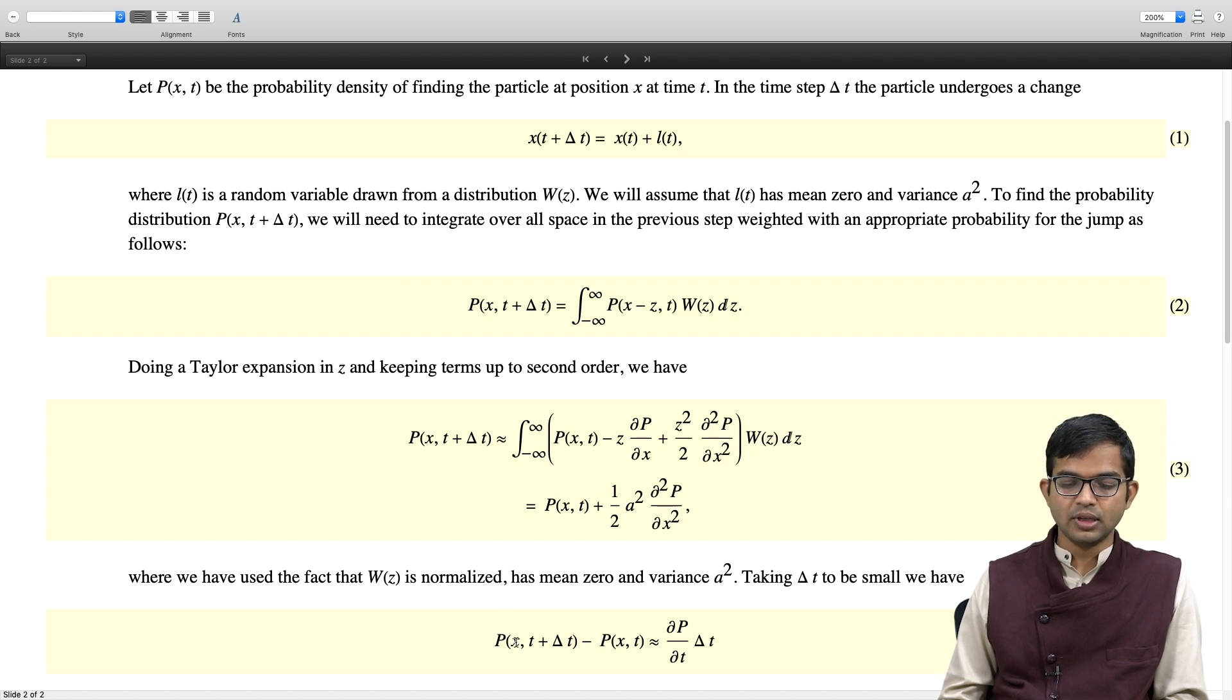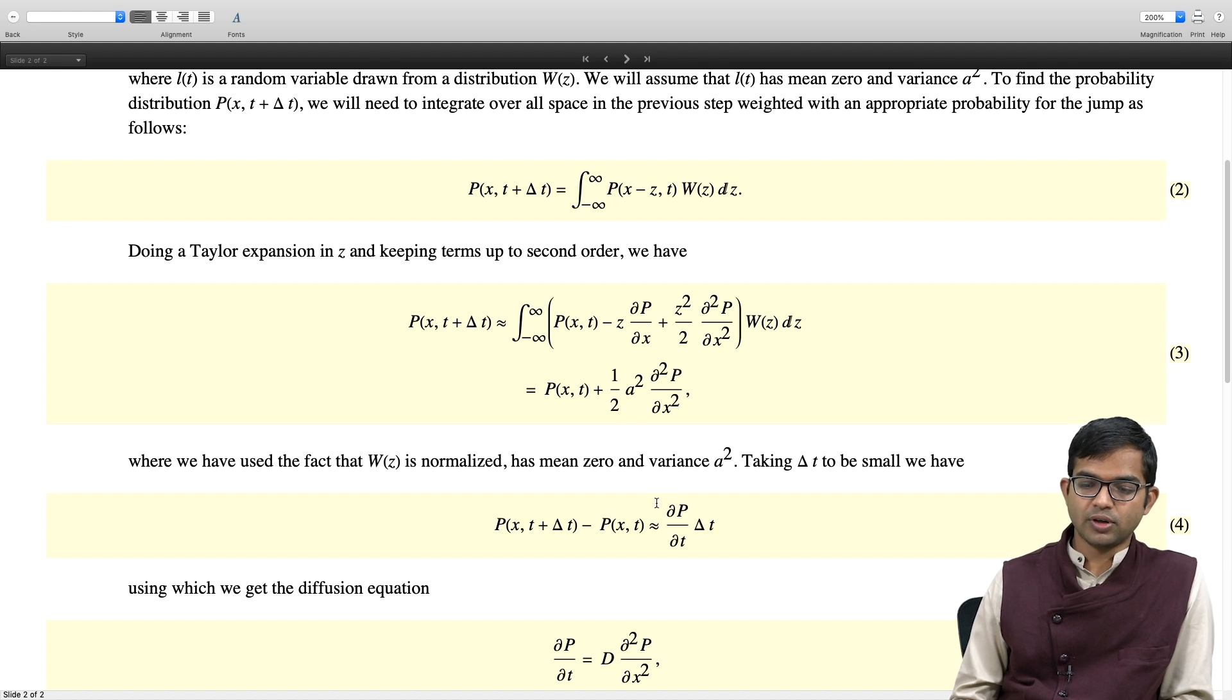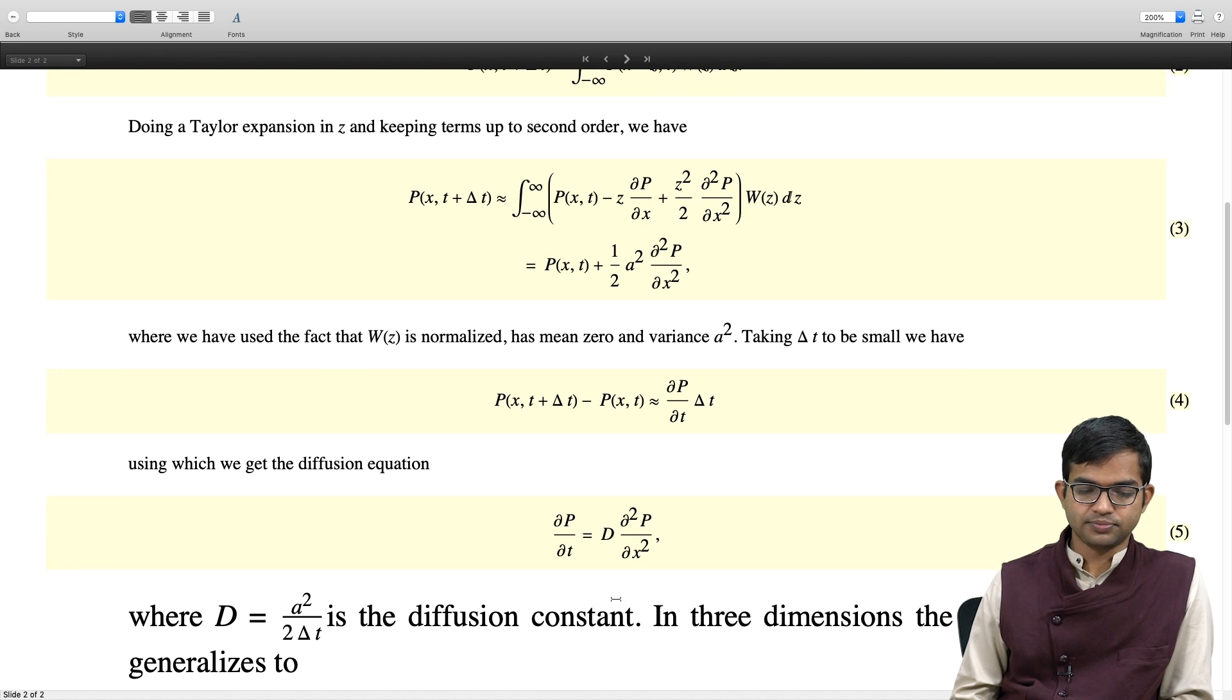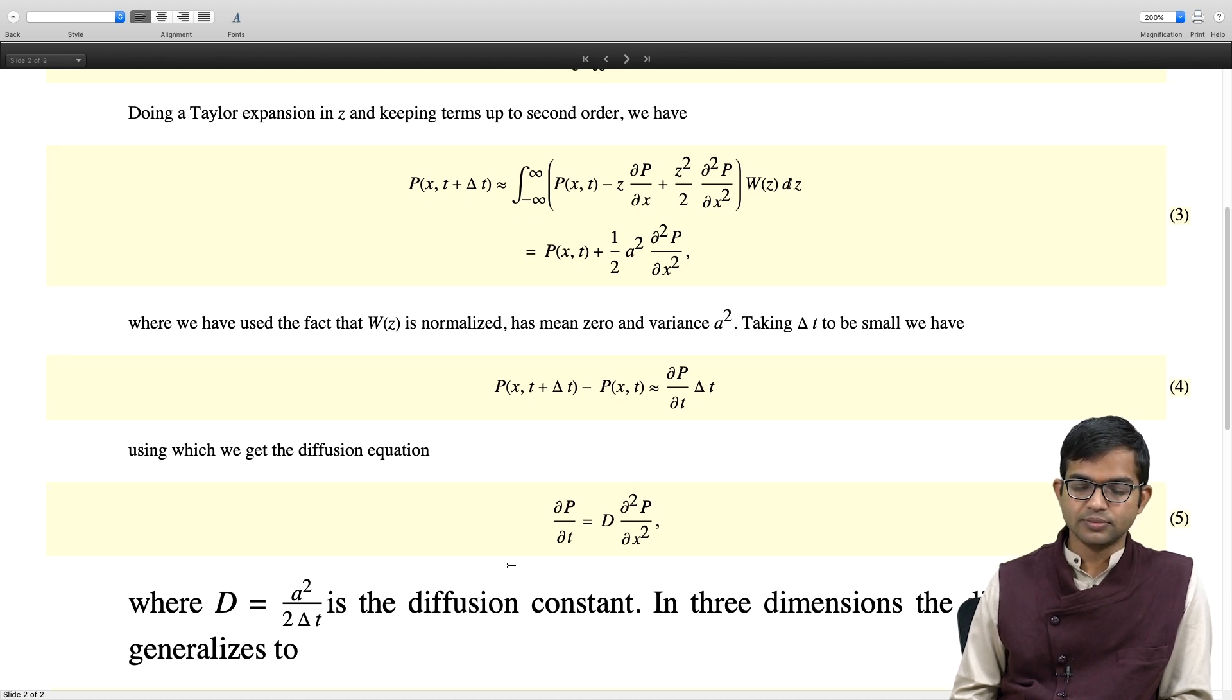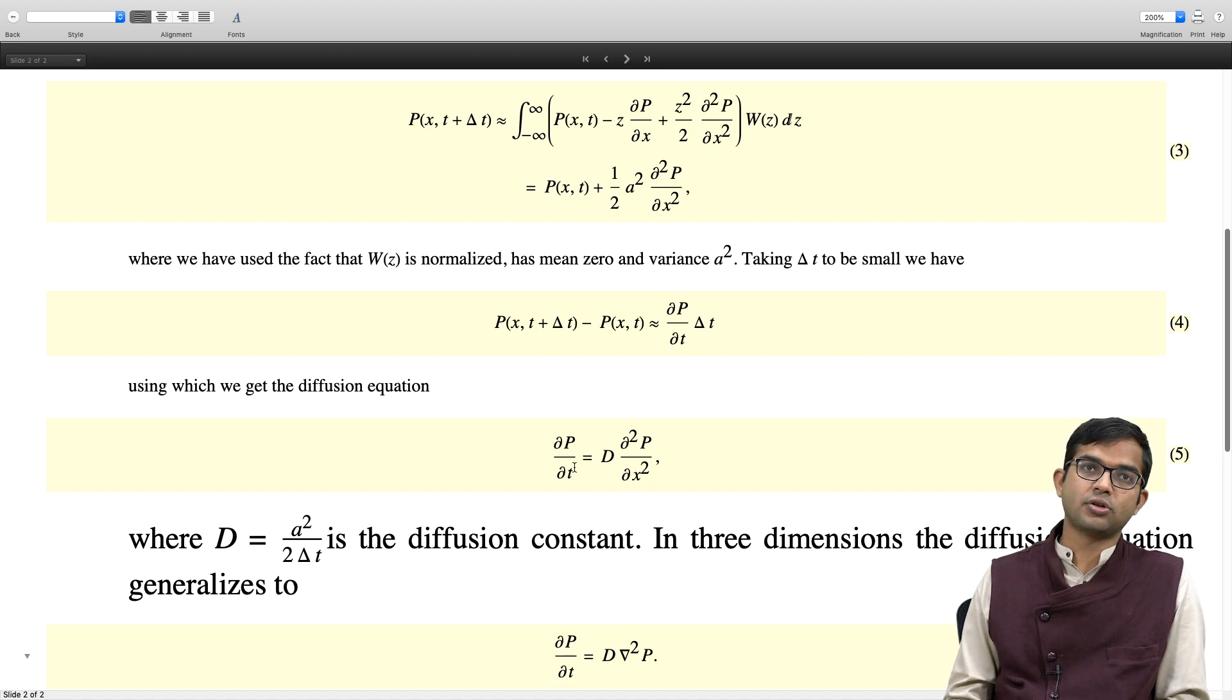And so taking delta t to be small, you can also argue that P(x, t + delta t) is connected to dP/dt. So P(x, t + delta t) minus P(x,t) is approximately just equal to dP/dt times delta t. I have two independent ways of doing this difference. Now on the one hand, this argument using W gave us this quantity. It is half a squared d²P/dx². And so if I equate these two different ways of getting this difference, then I have dP/dt is equal to D times d²P/dx², where capital D is equal to a squared by 2 delta t. So for some reason Mathematica has changed the font here, but it is okay.